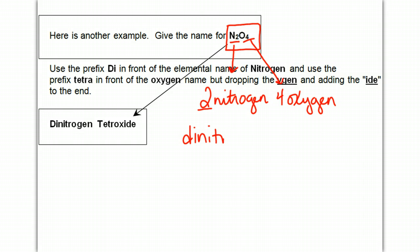So the prefix for two is di, so it's going to be dinitrogen, and the prefix for four is tetra, and instead of oxygen, I'm actually going to change this to oxide. So it's going to be tetraoxide, and instead of having two vowels right next to each other, I'm actually going to drop the A, and it'll just be tetroxide.